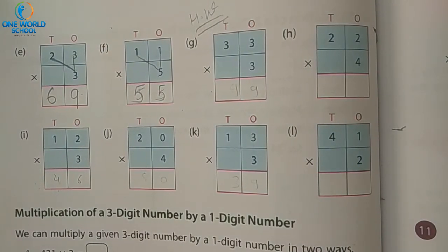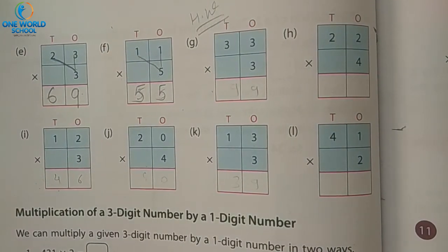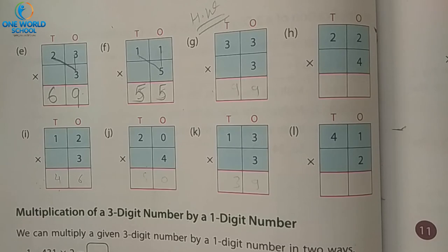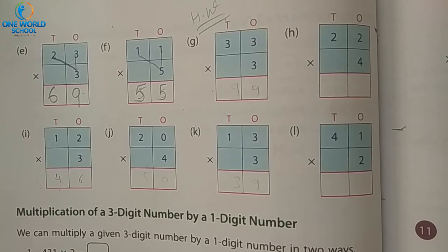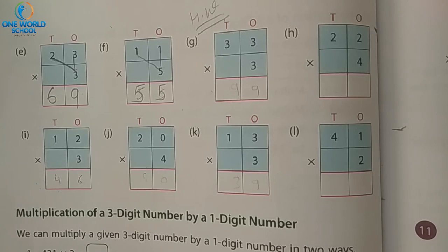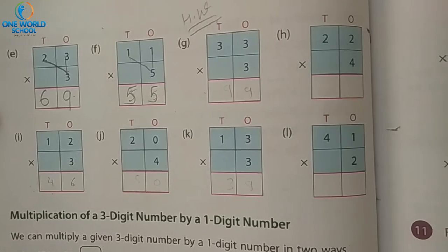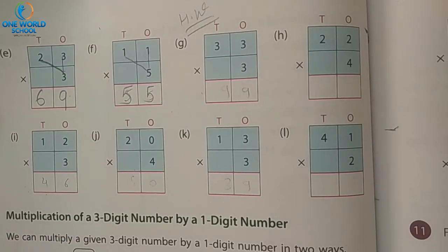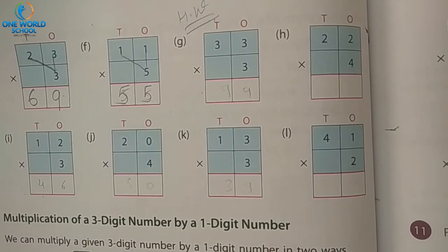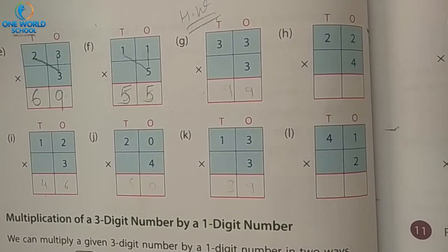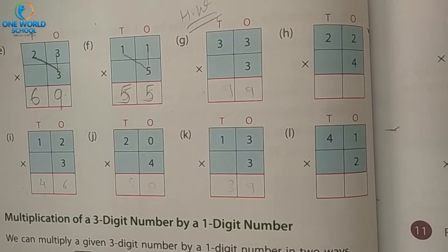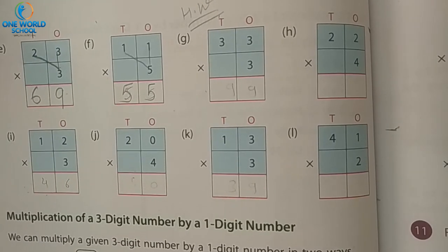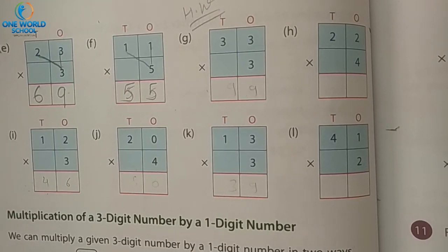From number G to number L, you will complete it in homework. And now we will learn multiplication of a three-digit number by a one-digit number. Take exercise number eleven on page number one hundred one.